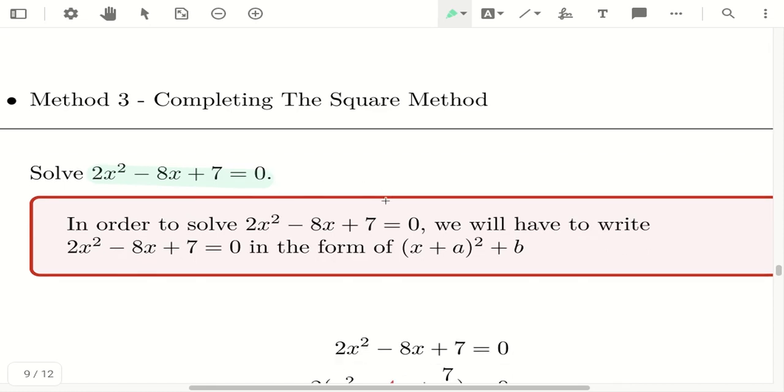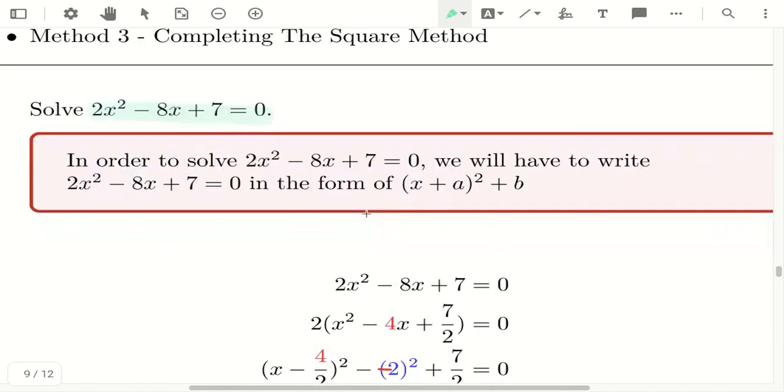So we will learn how to complete the square and then we'll learn how to use completing the square to solve quadratic equations. So completing the square means that we want to write this 2x² minus 8x plus 7 into this form.